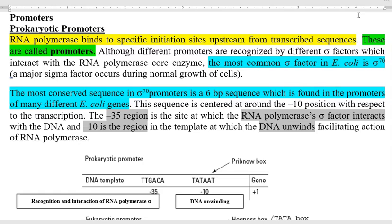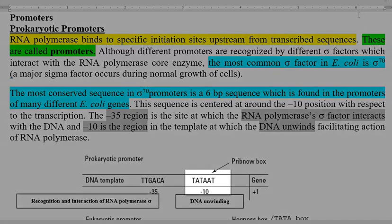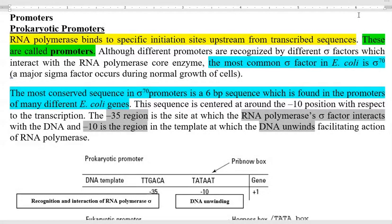The most conserved sequence in sigma 70 promoters is a six base pair sequence found in the promoters of many different E. coli genes. This sequence is centered at around the minus 10 position. As shown in the diagram, this is the position at which the six base pair sequence is present, and it is the region in which the DNA will be unwound.